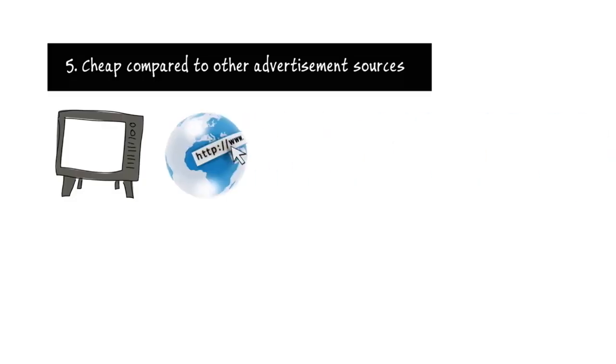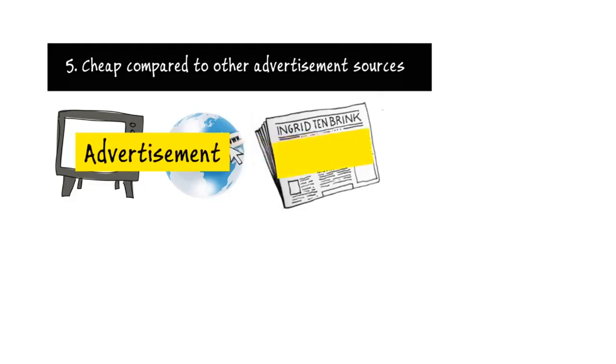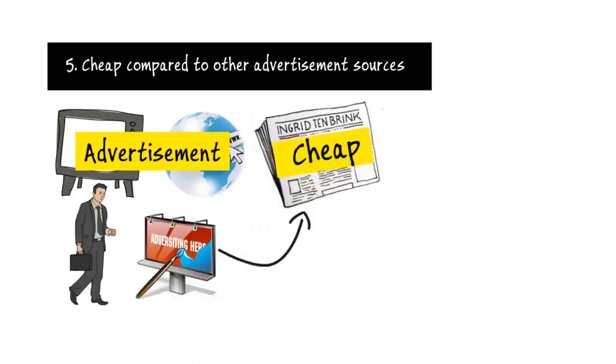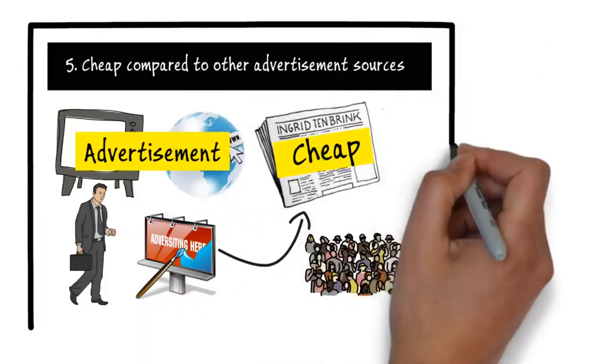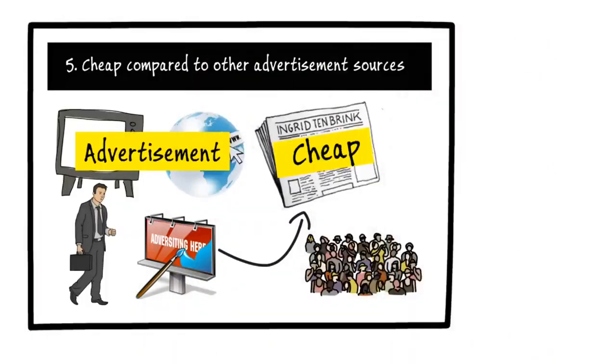Fifth is cheap compared to other advertisement sources. Television, the internet, and so many things are there where people advertise their products, but comparatively the newspaper is cheap, and hence it is advantageous for businessmen who want to advertise their products. Also, people can know about the latest trends in products.